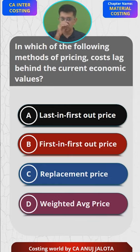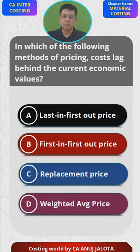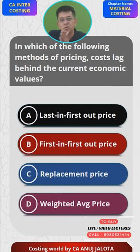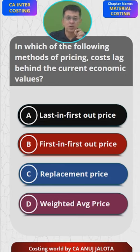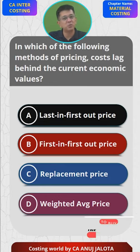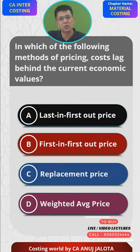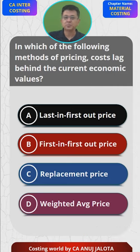So the answer should be A. Under FIFO, it will be correct because the goods will get valued at the latest lot. Under replacement price, once you issue the goods you record them at the price at which you'll purchase them next, so that will usually be correct as well.